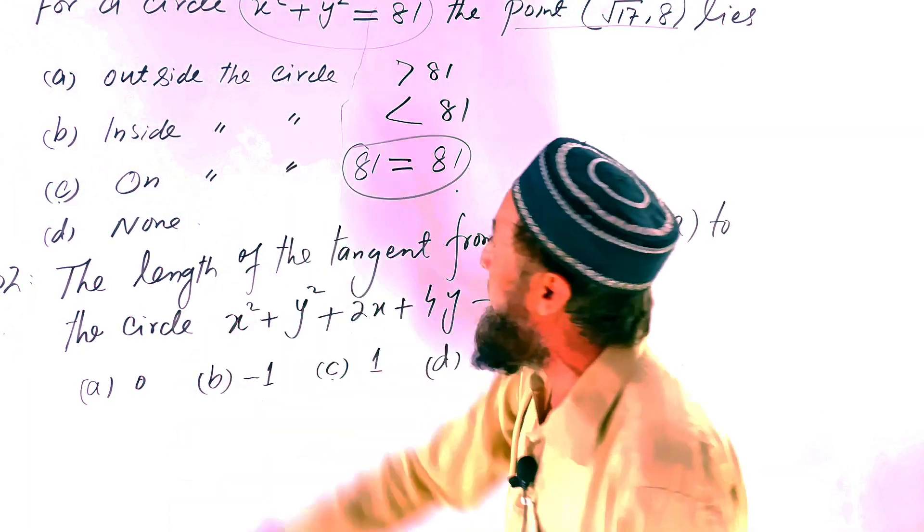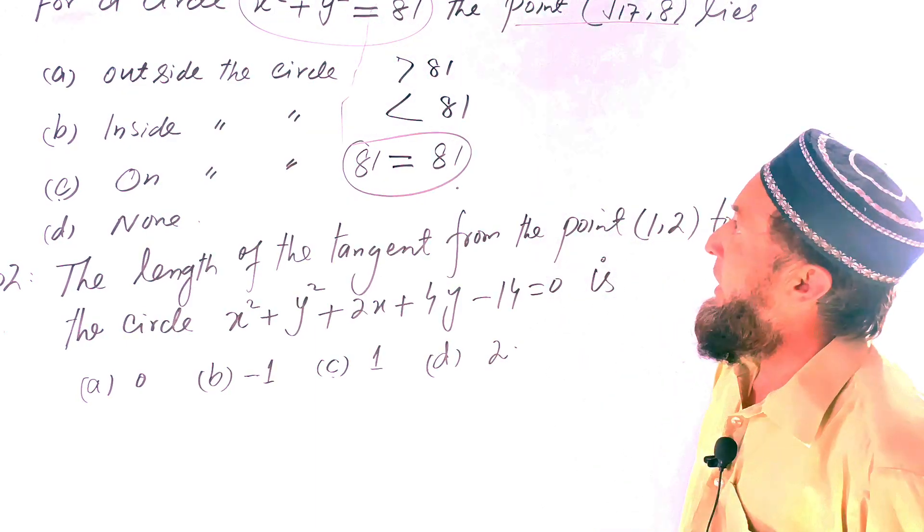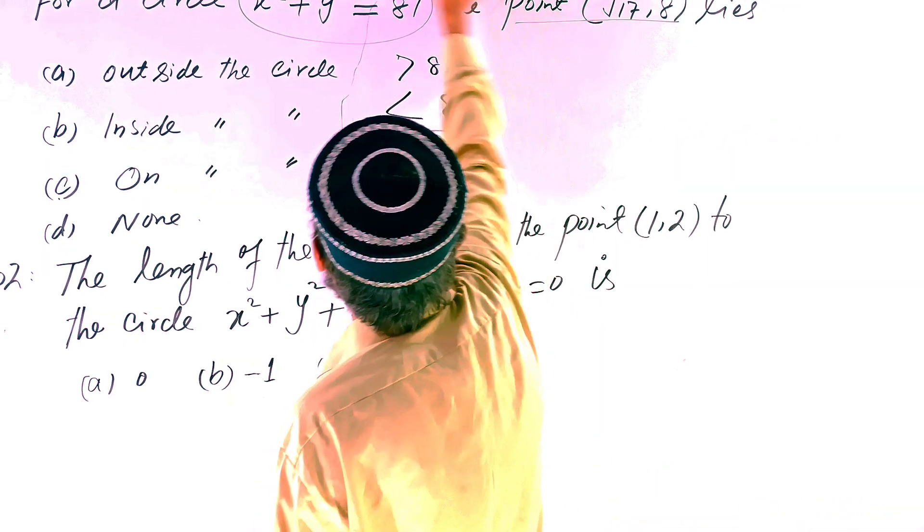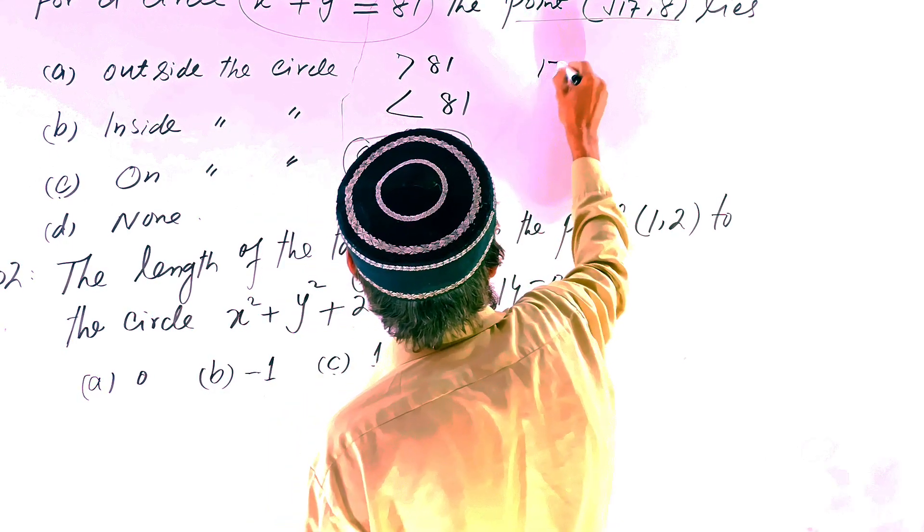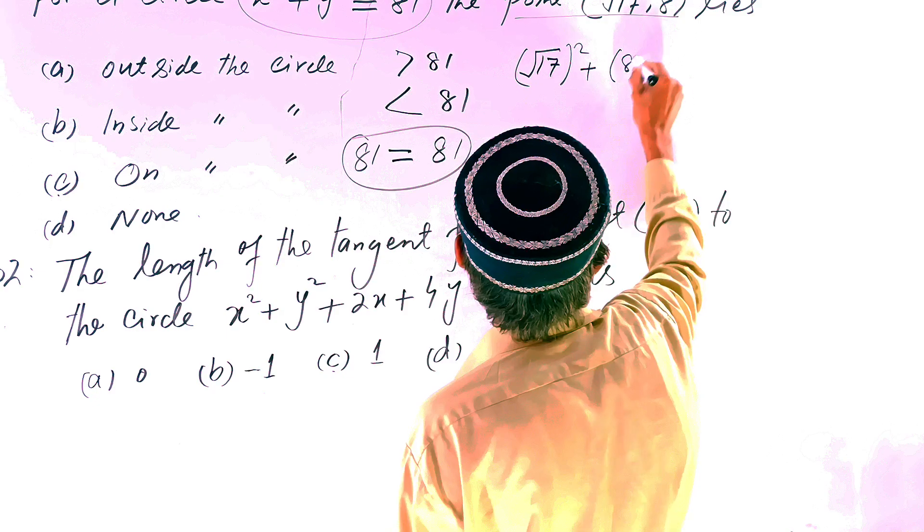So first of all, we put here - in place of x we put √17 whole square, plus in place of y we put 8 whole square is equal to 81. So both roots are cancelled.